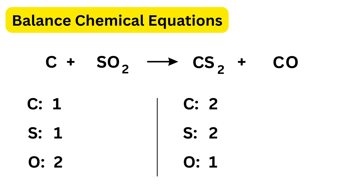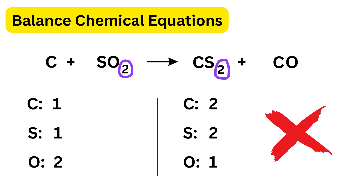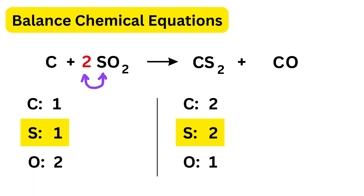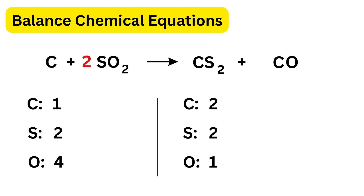Remember the rule: subscripts are part of the compound and cannot be changed — only coefficients may be changed. Look at sulfur first: the right side has two sulfurs in CS₂ while the left has only one in SO₂. We put 2 in front of SO₂, giving two sulfurs and 2 × 2 = 4 oxygens on the left. Now fix oxygen: the left has four oxygens but the right has only one from CO. We put 4 in front of CO on the right, giving 4 × 1 = 4 oxygens.